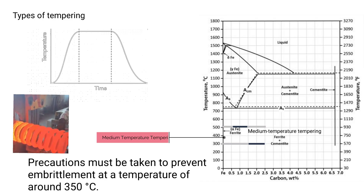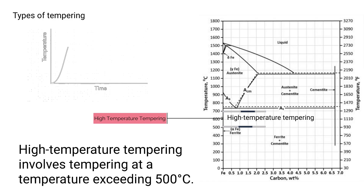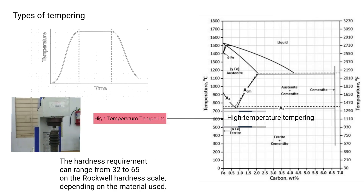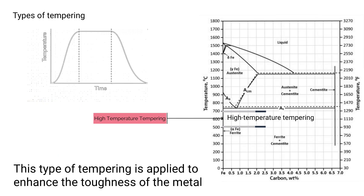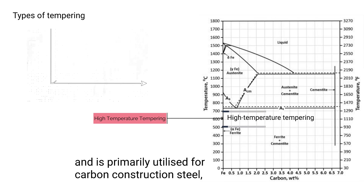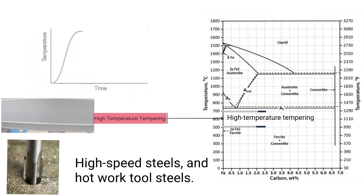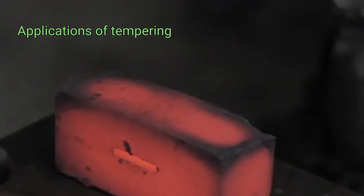High temperature tempering involves tempering at a temperature exceeding 500°C. The hardness requirement can range from 32 to 65 on the Rockwell hardness scale depending on the material used. This type of tempering is applied to enhance the toughness of the metal and is primarily utilized for carbon construction steel, high speed steels, and hot work tool steels.